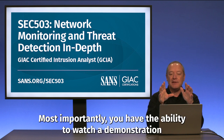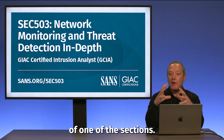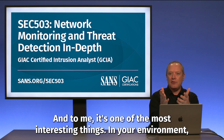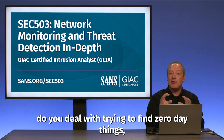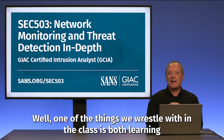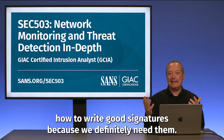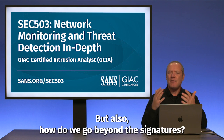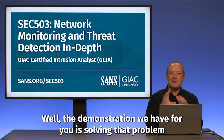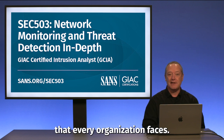Most importantly, you have the ability to watch a demonstration of one of the sections — it's a complete module of the class. And to me, it's one of the most interesting things. In your environment, do you deal with trying to find zero-day things, things that you have no signatures for? One of the things we wrestle with in the class is both learning how to write good signatures, because we definitely need them, but also how do we go beyond the signatures? How do I find the things that there are no signatures for? The demonstration we have for you is solving that problem with a real problem that every organization faces.